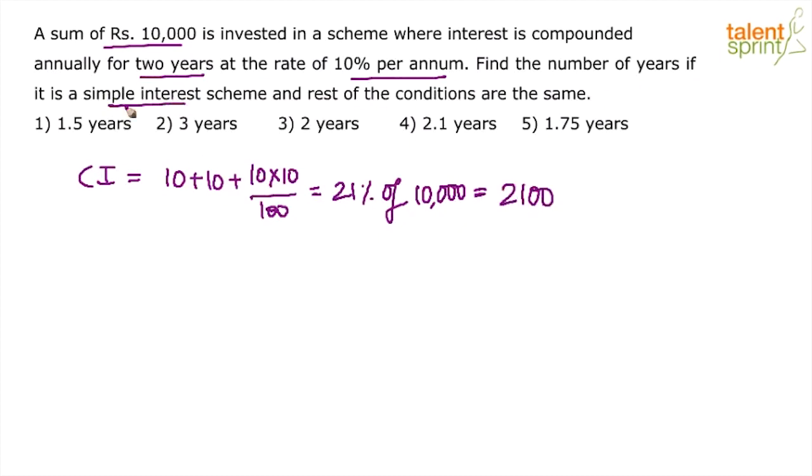Now if it is a simple interest scheme, then find out the number of years where the rest of the conditions are same. Rest of the conditions are same means what? Interest is same, which means SI is equal to CI, which is equal to 2,100. And you know what is the formula? PTR by 100. So do that.